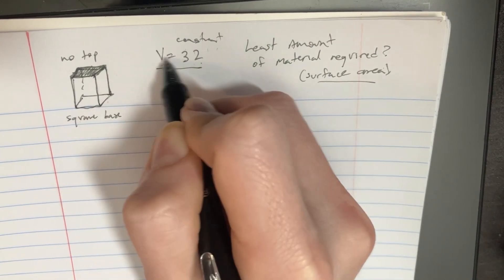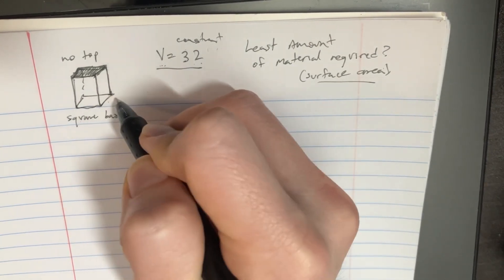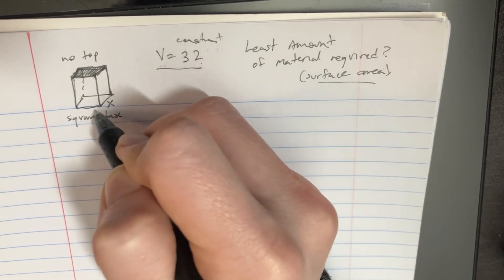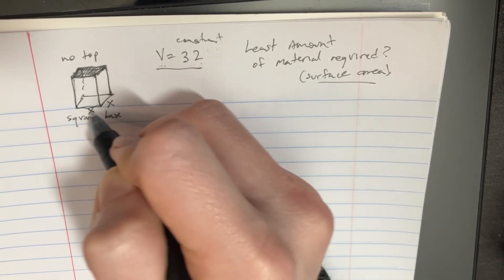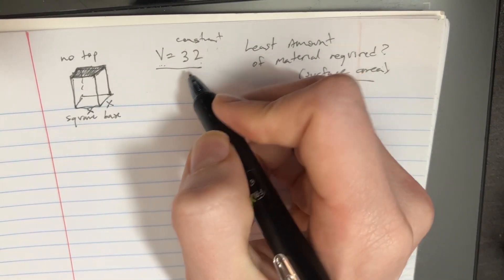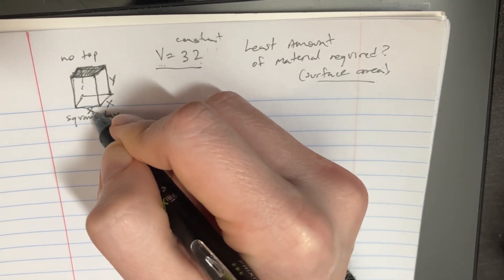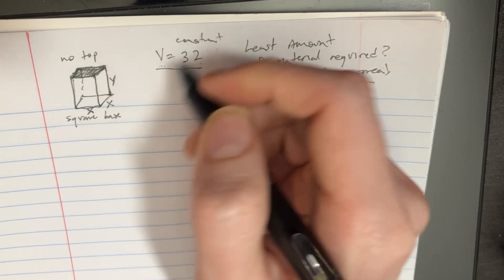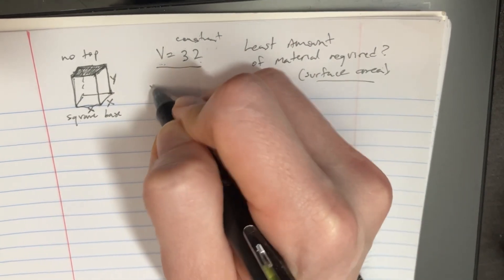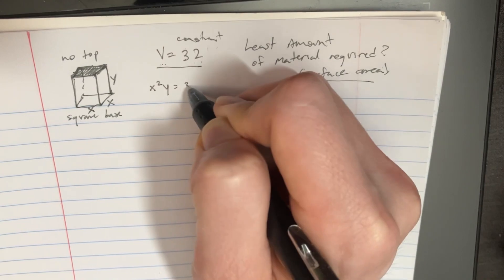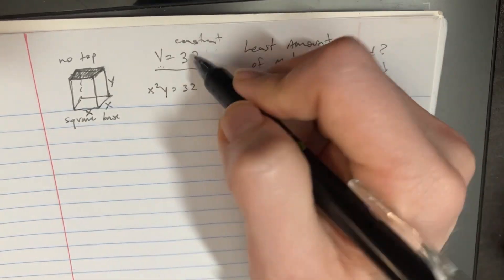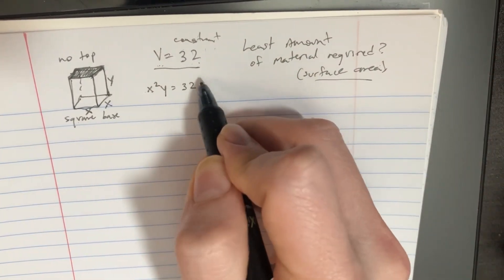Let's figure out this equation for volume first because we know it's a square base, so that means that these lengths will be the same x by x, and we'll put that as y, which means that base times height times width is the volume, which means that x squared y is 32. So that's our constraint.